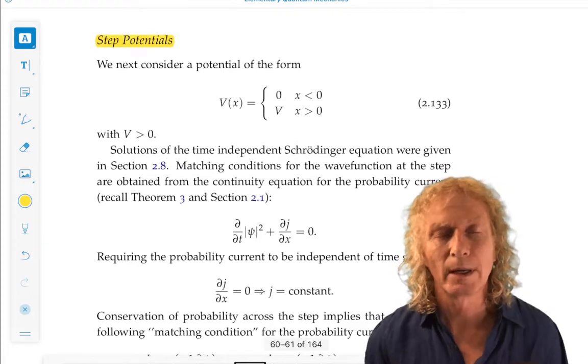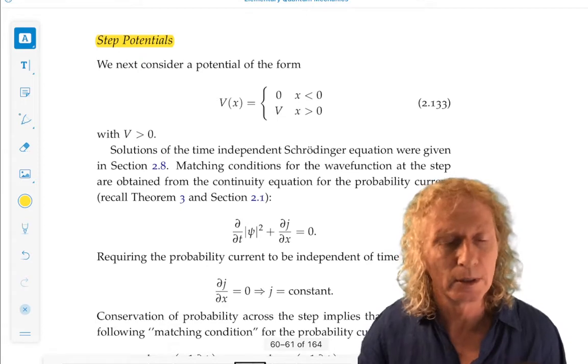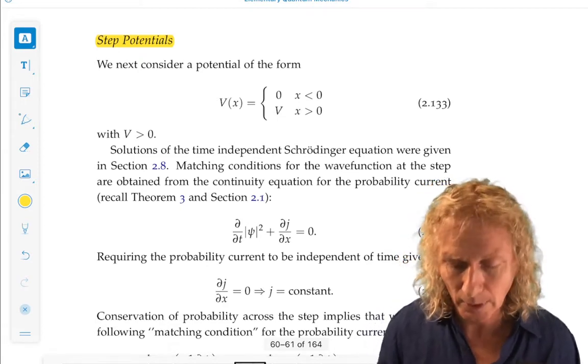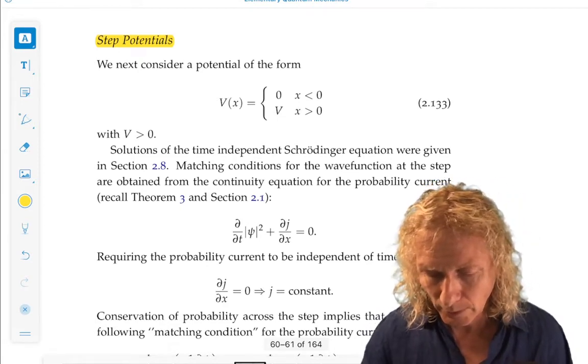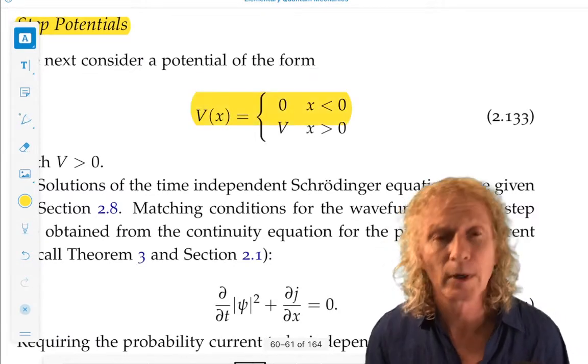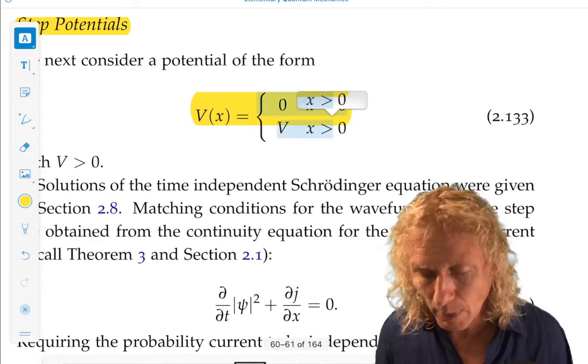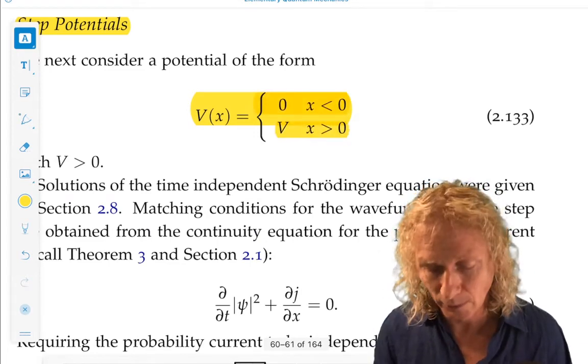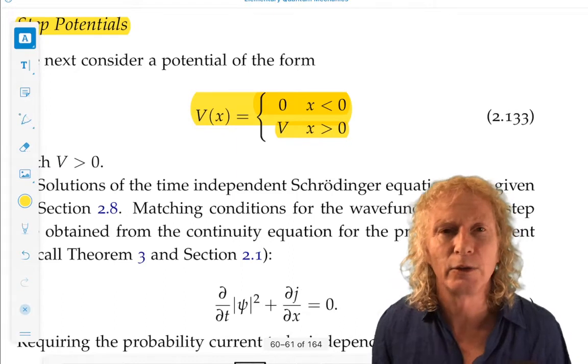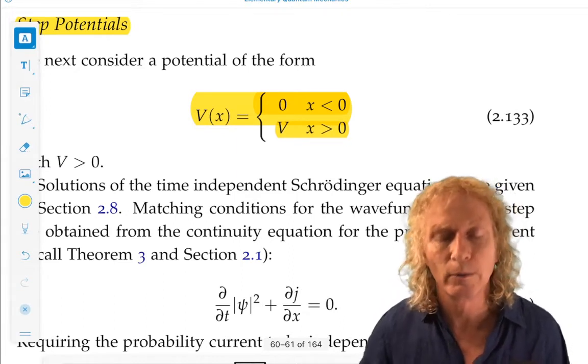So what do I mean by that? Last time we considered a constant potential on the entire real line. Now we're going to consider a situation where the potential is zero for x less than zero and constant but positive for x greater than zero. So that's where the step comes from. Hit zero and then at x equals zero you step up to a value V.